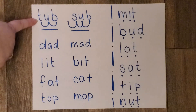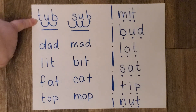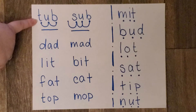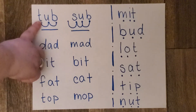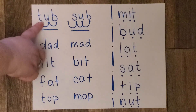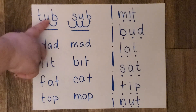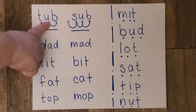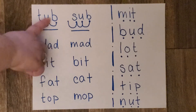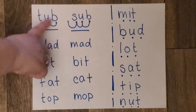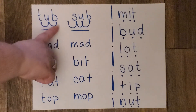When I have a stop sound like T, this is how I smooth blend the word. I blend the first sound to the middle sound right away — tub, tub.